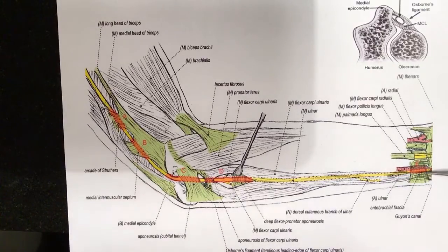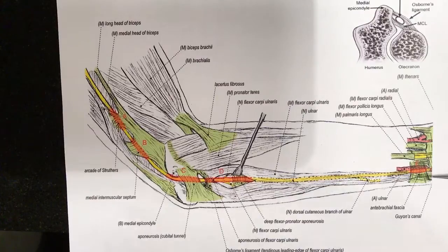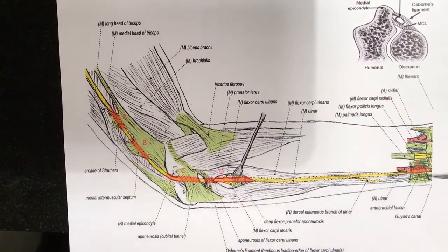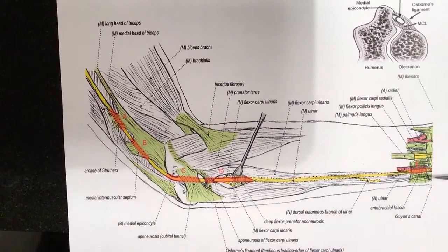The antebrachial fascia can be thickened near the wrist and cause compression, and more distally in the hand at Guyon's Canal. There are three zones of Guyon's Canal, which will be covered in a separate video discussing ulnar nerve compression there.